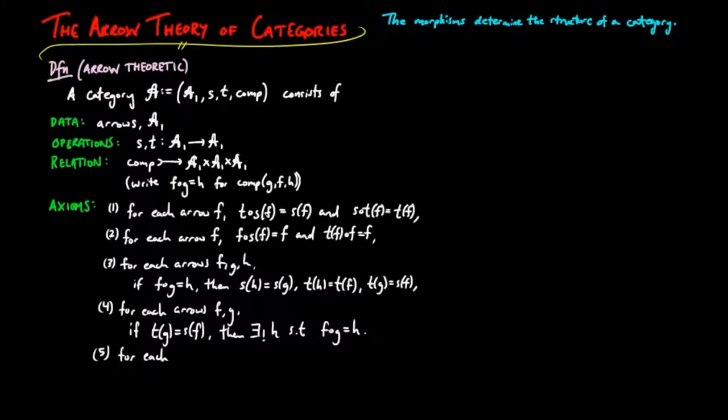And five, for each arrow f, g, and h, the quantity fg precomposed by h is equal to f precomposed by the quantity gh when this arrow is defined.